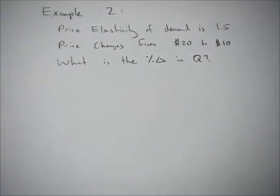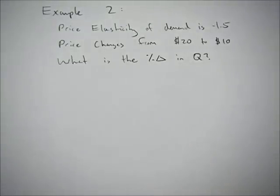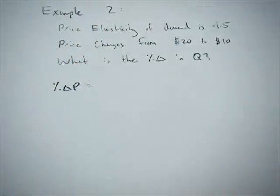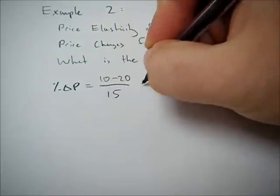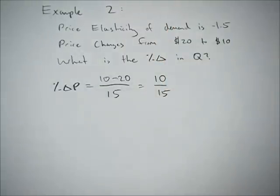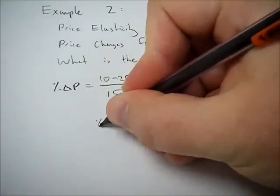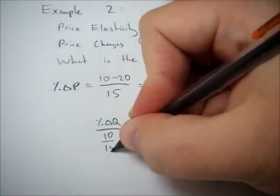For the second example, what happens if they give you the price elasticity of demand and want you to find the percent change in something? Here we have the price elasticity of demand equal to negative 1.5, and the price changes from $20 to $10 — so the price goes down. First let's find the percent change in P: that's 10 minus 20 over the average of 15, giving us negative 10 over 15.